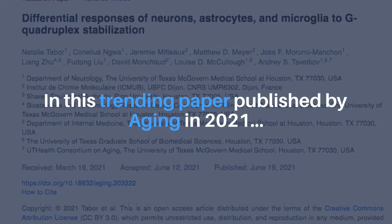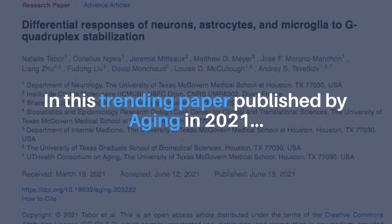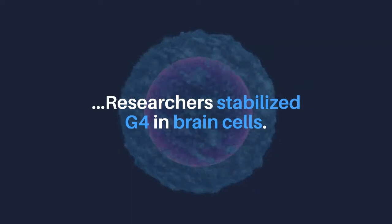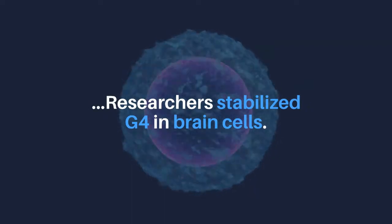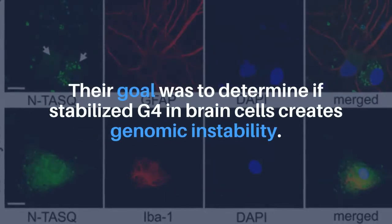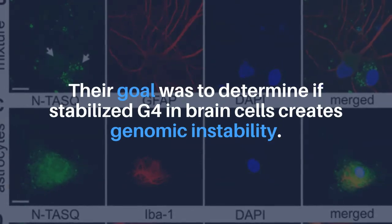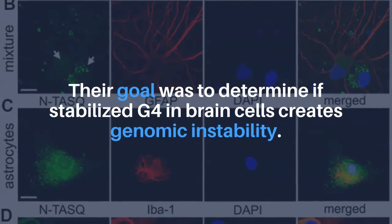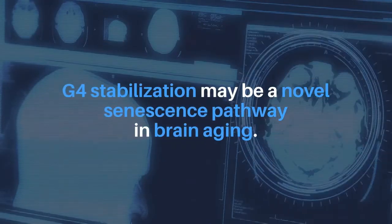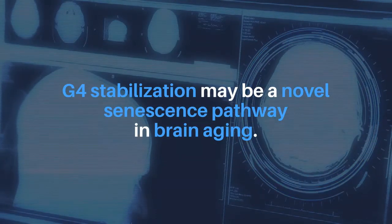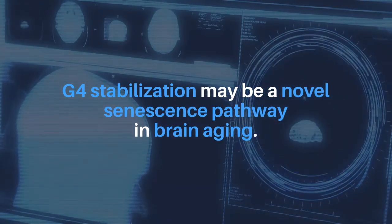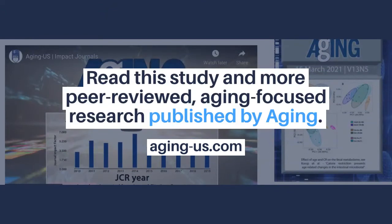In this trending paper published by Aging in 2021, researchers stabilize G4 in brain cells. Their goal was to determine if stabilized G4 in brain cells creates genomic instability. G4 stabilization may be a novel senescence pathway in brain aging. Read this study and more peer-reviewed aging-focused research published by Aging.